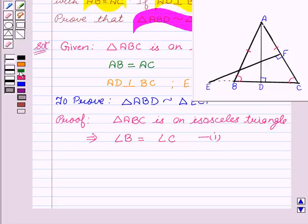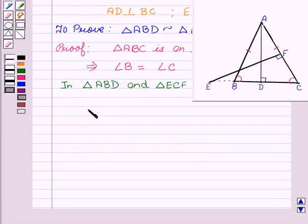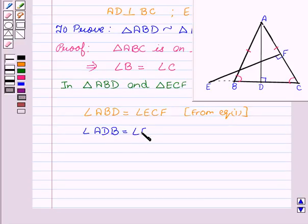Now in triangle ABD and triangle ECF, we have angle ABD equal to angle ECF, and angle ADB equal to angle EFC equal to 90 degrees. We are given that AD is perpendicular to BC and EF is perpendicular to AC.